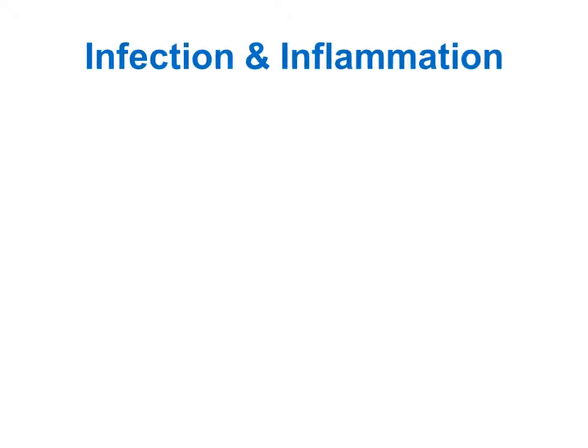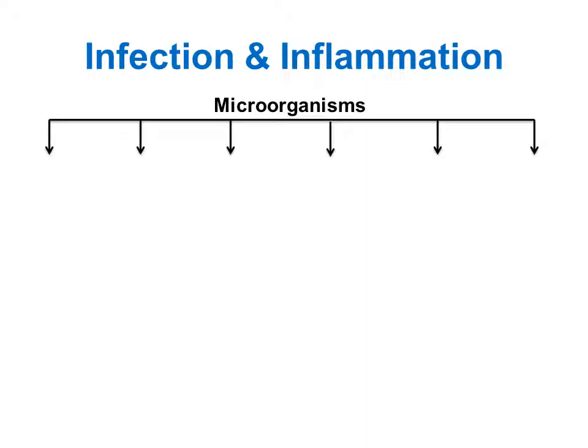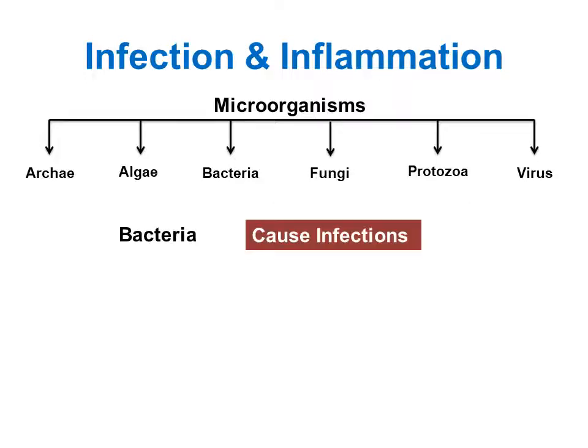Before learning about URTI, let's learn the meaning of two words: infection and inflammation. Every day we come in contact with microorganisms. The major groups of microorganisms are algae, bacteria, fungi, protozoa and viruses. For simplicity, I will refer to them as bacteria. Bacteria present in the air — we breathe in bacteria, or we take bacteria along with food or water, or bacteria can enter our body through a cut in the skin. Some bacteria cause infections in humans. These bad bacteria are also known as pathogens.